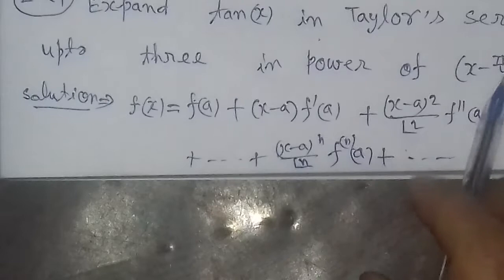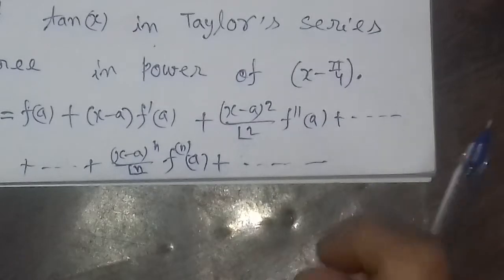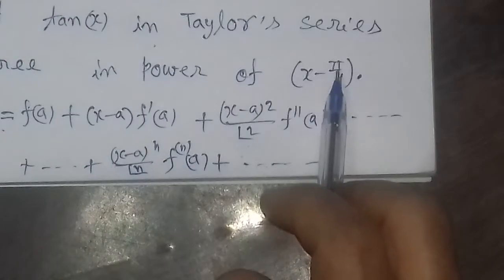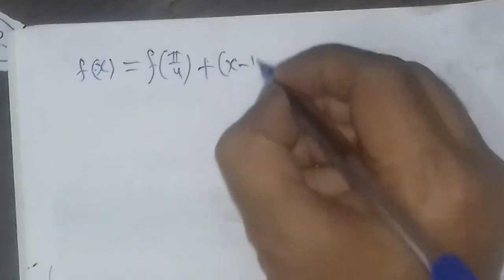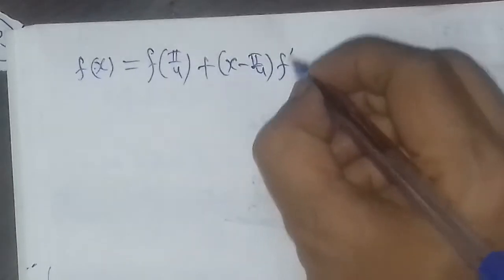Since we need to expand about (x minus π/4), the value of a is given as π/4. So in the Taylor series formula, we put a equal to π/4. The Taylor series for f(x) becomes: f(π/4) plus (x minus π/4) times f'(π/4), and so on.